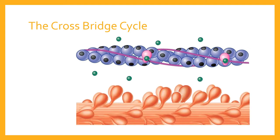To summarise: calcium ions flood into the cell from the sarcoplasmic reticulum and enable muscle contraction, but that calcium is only present when an electrical impulse stimulates the cell via the neuron. As soon as the signal stops, the calcium begins to be drawn back out of the sarcoplasm into storage, recovering the binding sites and ultimately relaxing the muscle fibres. The rest of this video is about what happens if that electrical signal is repeated.